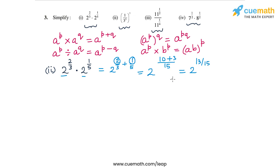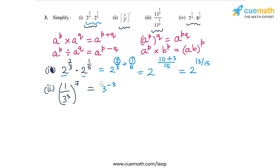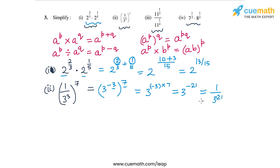For the second part, we have (1/3³) to the power 7. I can write 1/3³ as 3 to the power minus 3, because 3 to the power minus 3 equals 1 divided by 3 to the power 3. So we have 3 to the power minus 3, raised to the power 7. The exponents multiply, giving 3 to the power minus 21, which can be written as 1 by 3 to the power 21.